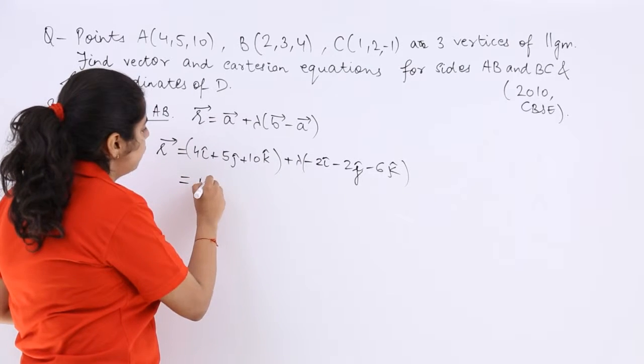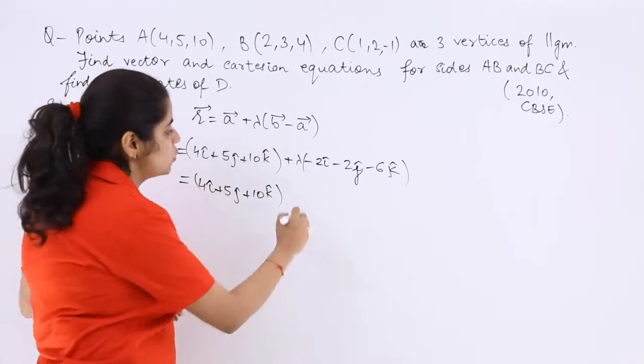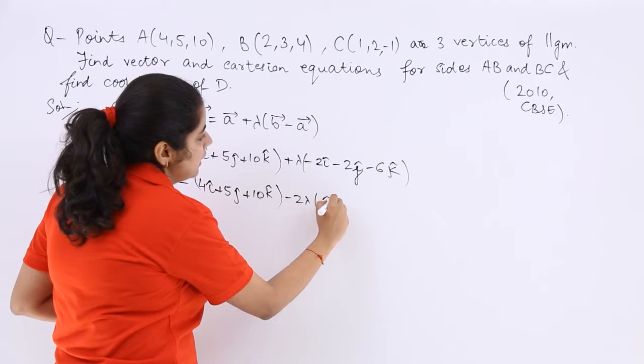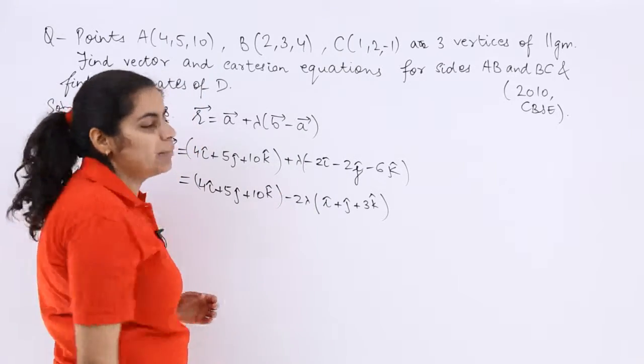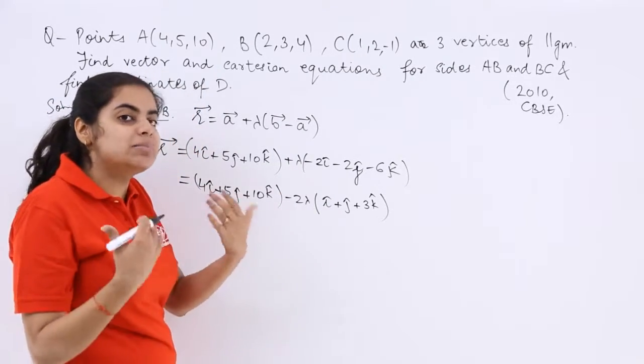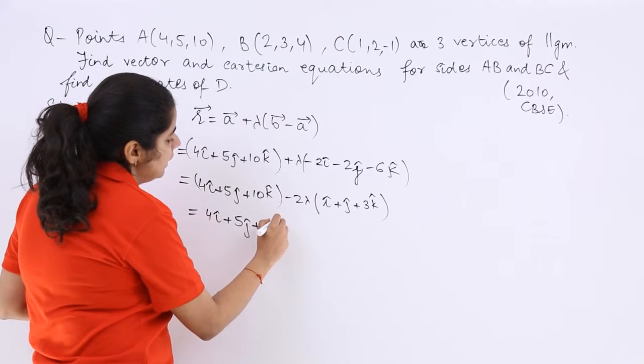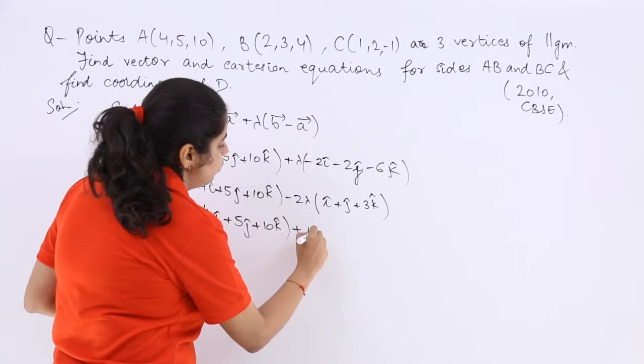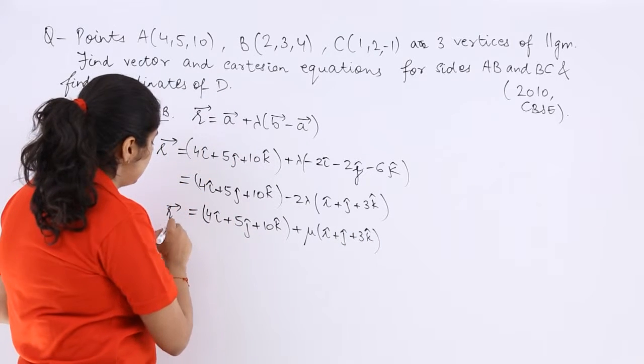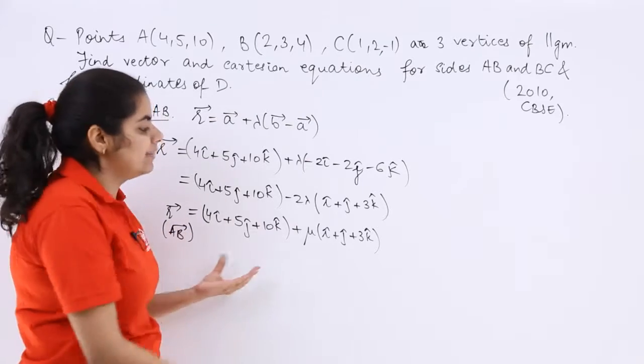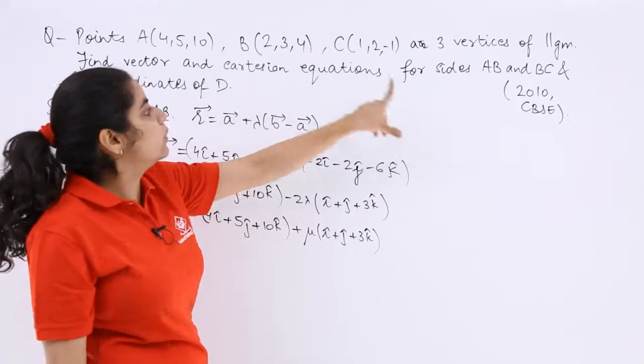Now you can see that minus 2 can be taken out as common. So it is 4i plus 5j plus 10k, and you can take minus 2 common. So minus 2 lambda i cap plus j cap plus 3k cap. Now this minus 2 lambda can always be substituted by some other scalar. So it is 4i cap plus 5j cap plus 10k cap plus mu times i cap plus j cap plus 3k cap. This is the equation of R vector for side AB in the vector form. This is the first answer.